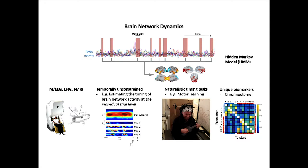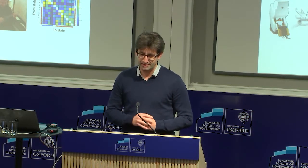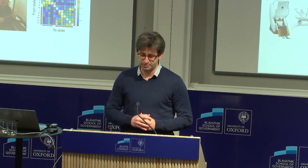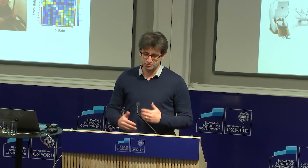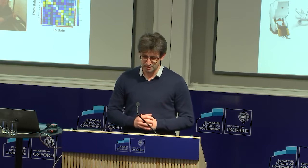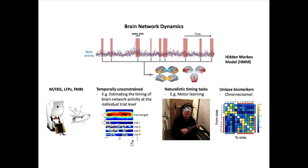Much of what we do is described as temporally unconstrained. A good example of that is estimating the timing of brain network activity in task data on the individual trial level with high temporal precision, which allows us to analyze new types of experiments with very naturalistic timing. Finally, we use features of brain network dynamics to provide new unique biomarkers for analyzing and understanding clinical disorders such as bipolar and Alzheimer's disease.